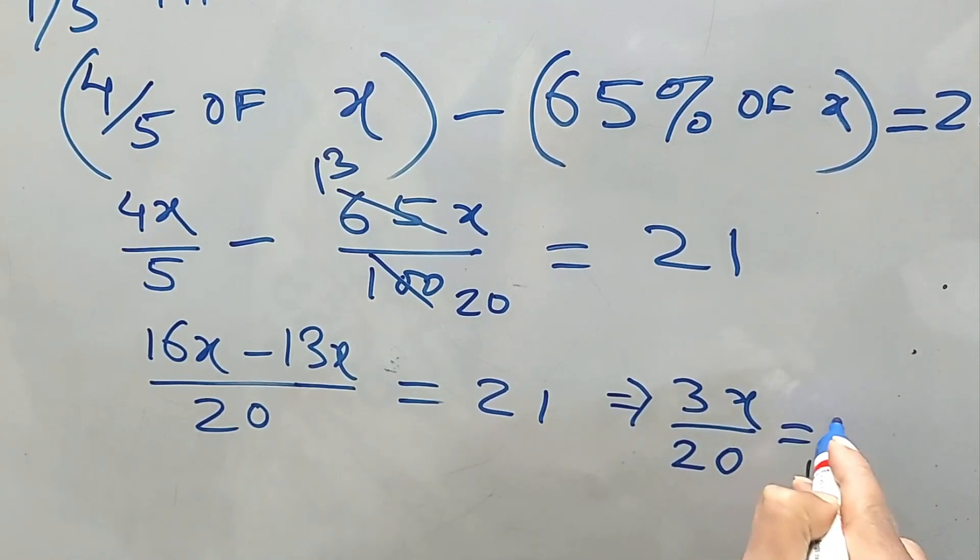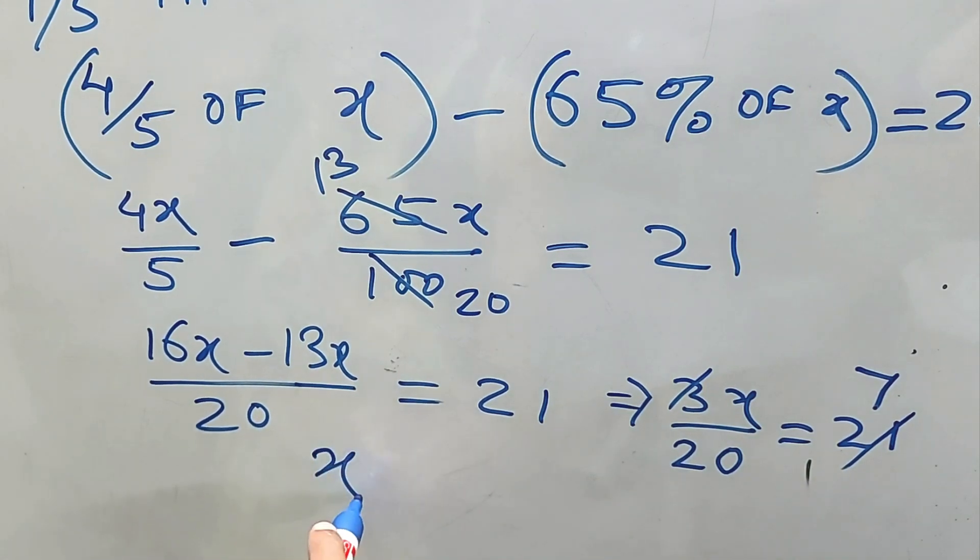Now again, this 3 and this 21—this one will be 7 if we divide both sides by 3. Therefore, x is equal to 7 into 20, that is 140. You like it?